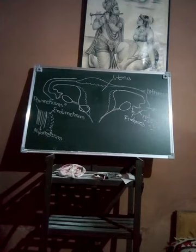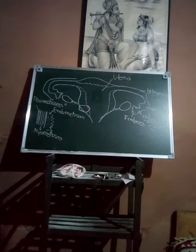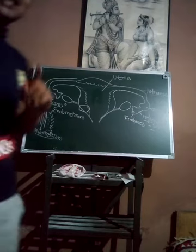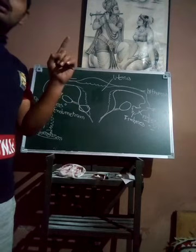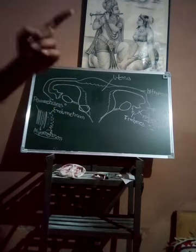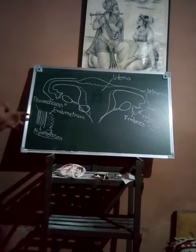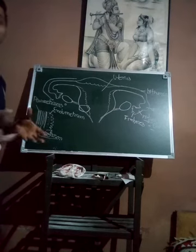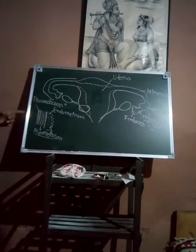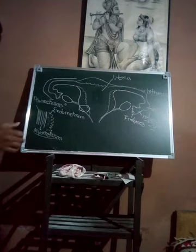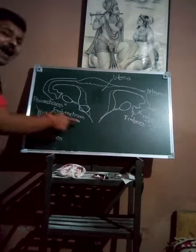The three layers have different functions. The perimetrium is protective in function — it protects the uterus. The myometrium is made up of smooth muscles; these smooth muscles contract and relax and produce the contractions during parturition. The baby's expulsion outward happens through the contraction and relaxation of these smooth muscles, meaning the myometrium helps in the process of parturition.